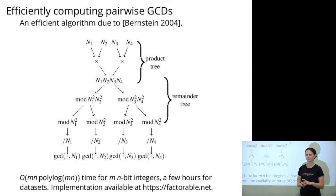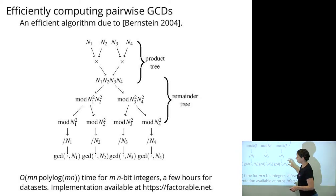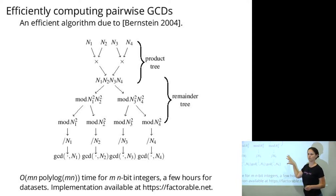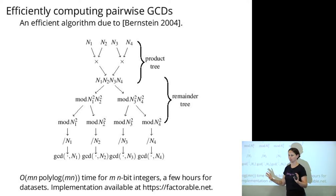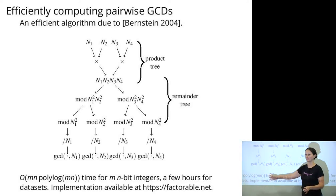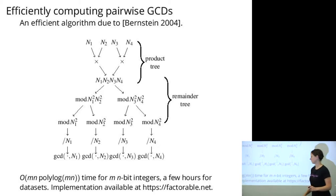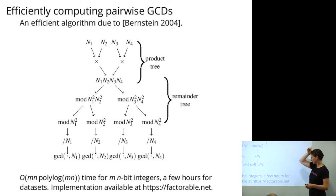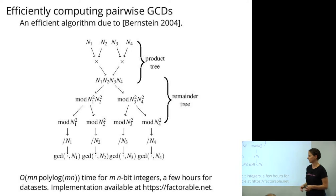The running time of this algorithm is O(m * n * polylog(m, n)) — essentially linear times some logs in the total number of input bits. In contrast to taking multiple years, this only takes a few hours to run on our datasets. An implementation is available if you want to play with it yourself.